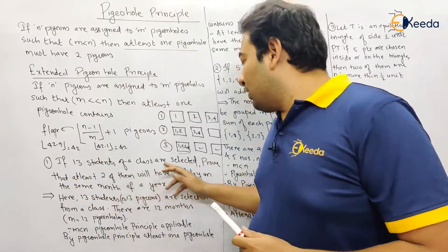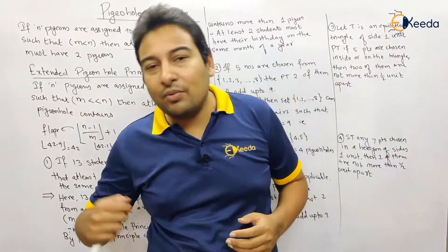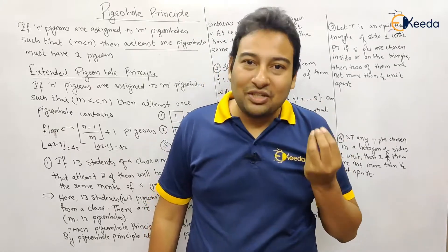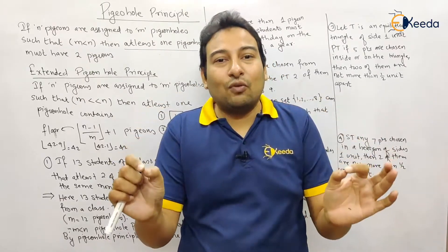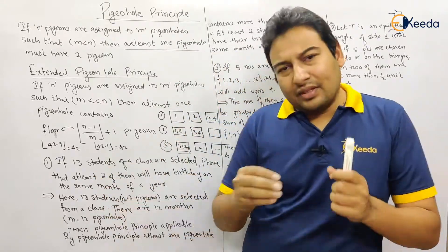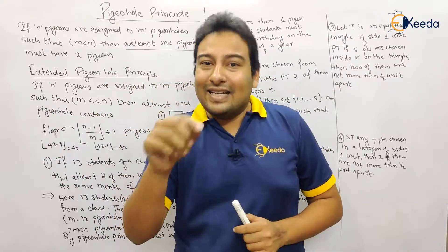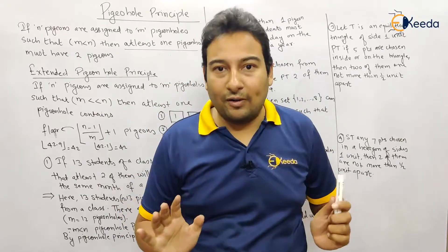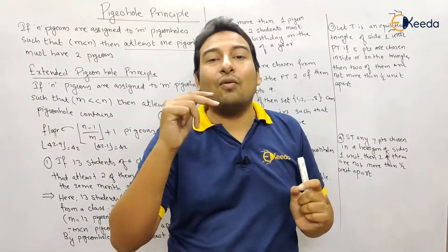First problem: 13 students of a class are selected. Prove that at least two of them will have their birthday on the same month of a year. How many students? 13. How many months? 12. So 13 students means n = 13 pigeons, and 12 months means m = 12 pigeonholes. Since m is less than n, by the Pigeonhole Principle, at least one pigeonhole must have two pigeons. Therefore, at least two students will have their birthday on the same month.